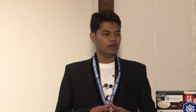Some issues while upgrading your cluster with KOPS: it might break if you are using Calico networking — this is a known issue and a fix is available. Also, make sure your KOPS version is supported for the target Kubernetes version — for example, to provision Kubernetes 1.7 you must use KOPS 1.7.